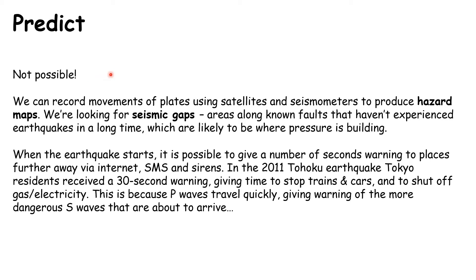Next: try to predict earthquakes. Unfortunately it's impossible to know when earthquakes are going to happen — we know where they'll occur, but not when. Instead we can do two things. First, we can map where all previous earthquakes have been and produce a hazard map. What we're looking for is areas along known faults that haven't experienced earthquakes in a long time, because pressure could be building up. These areas are called seismic gaps.